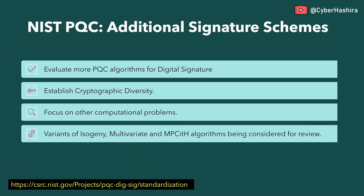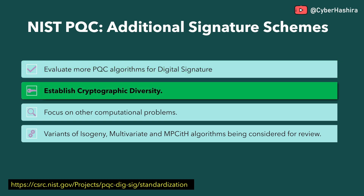I want to talk about the NIST additional signature scheme before wrapping up. The goal is simple: instead of depending on only a small number of cryptographic algorithms for digital signatures, NIST is trying to explore a broader set of alternative algorithms. One of the main goals is to provide more options instead of relying on just one or two proven methods. For example, most of the algorithms standardized by NIST are either lattice-based or hash-based. If everyone is using only one of these two types and they were broken in the future, it could create significant risk. To avoid this, NIST is working to include a variety of cryptographic algorithms.